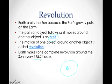One revolution is when the Earth makes one complete trip around the sun, and we complete a revolution about every 365 and a quarter days. That quarter adds up — multiply it by four and you get a whole extra day. So every fourth year we have a leap year with 366 days instead of 365, otherwise we'd eventually be celebrating New Year's in July. This year happens to be a leap year.